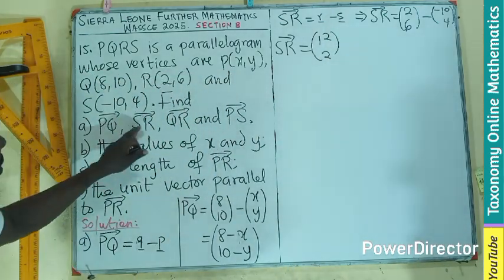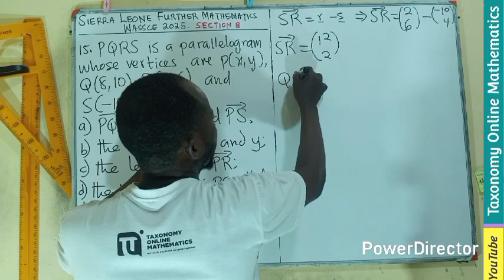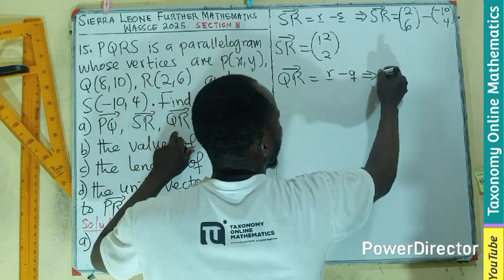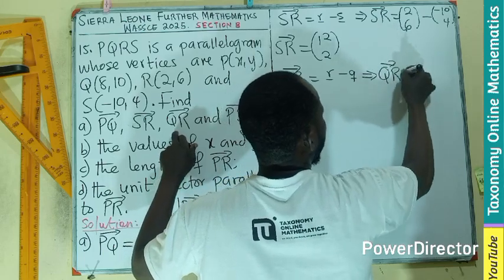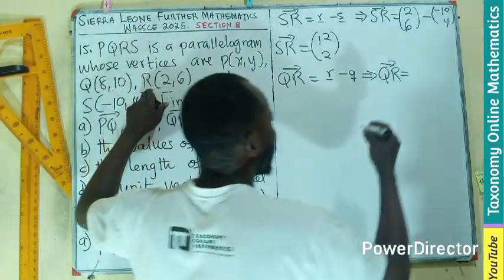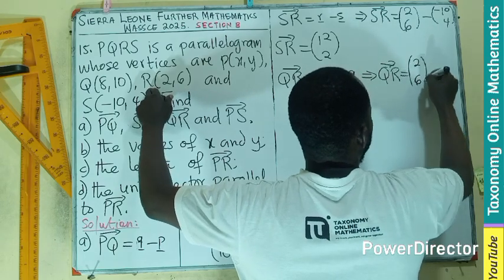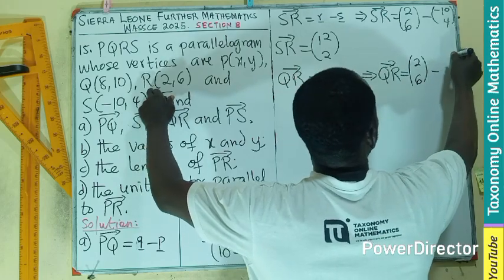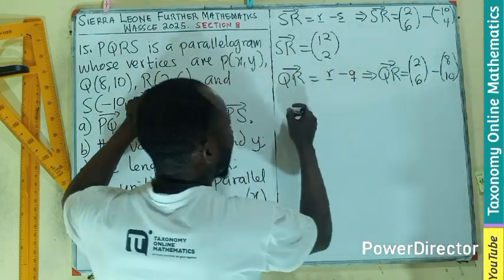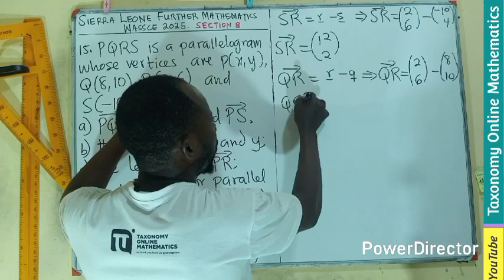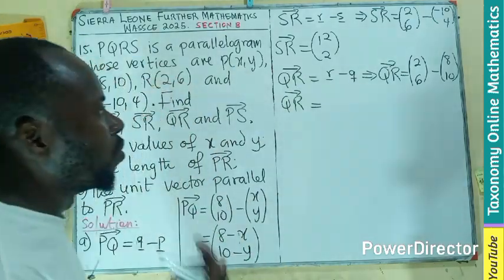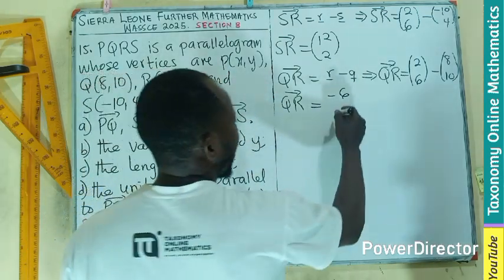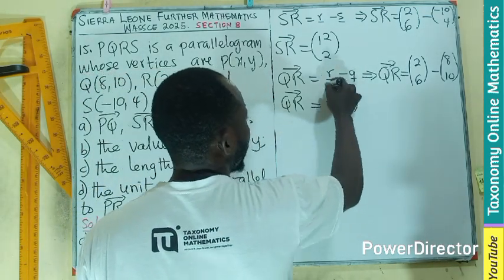Then let's take the third one, which is QR. It will also be position vector R minus Q. So QR will be position vector R, which is (2, 6), minus position vector Q, which is (8, 10). So QR will be 2 - 8, that's -6, then 6 - 10, that's -4.